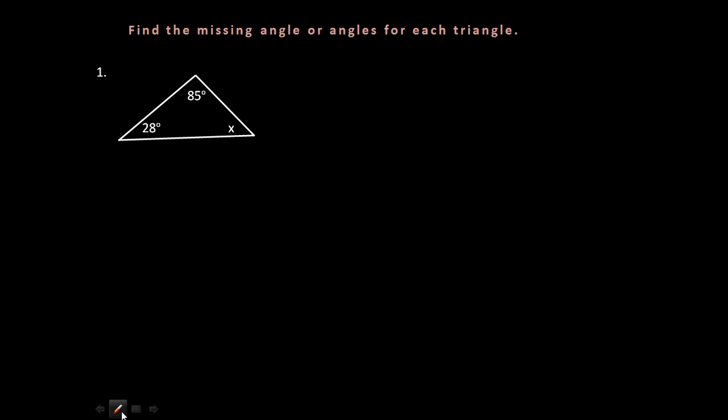So next up, let's take a look at some problems of what this might look like in class. Here's number one, and it says to find the missing angle or angles for each triangle. So in this one, we have one missing angle labeled X right here. We're supposed to find this measurement. Well, how do we do this? It's very simple. All you do is set up an equation where you take 28 degrees plus 85 degrees plus X degrees equals a total of 180.